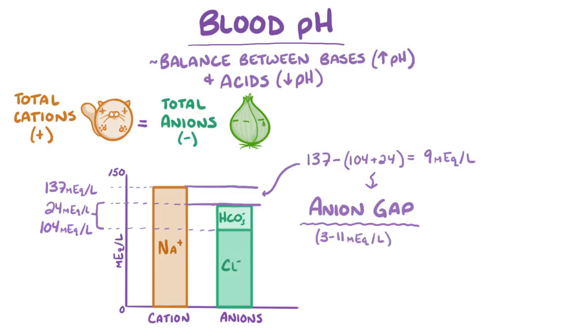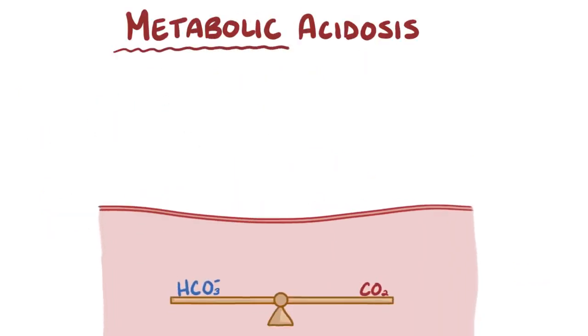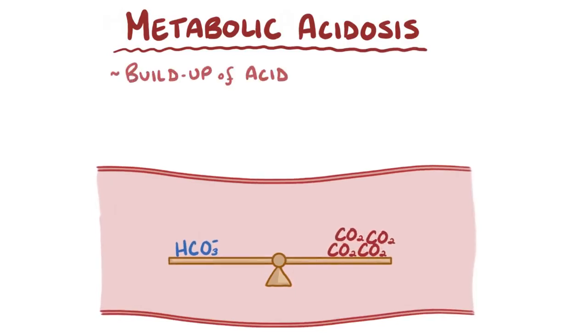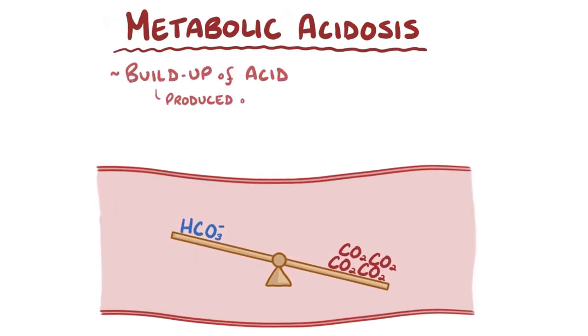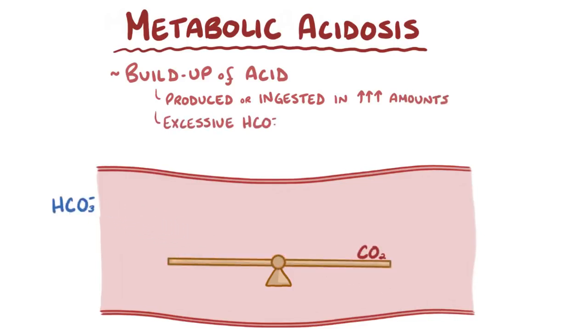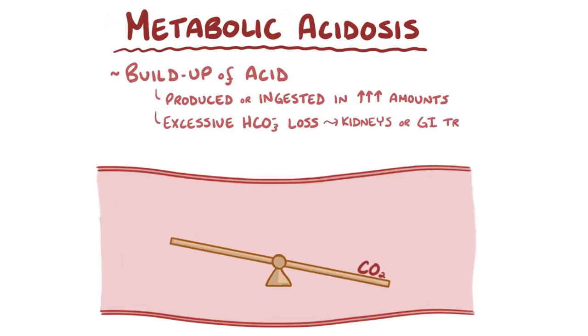The anion gap largely represents unmeasured anions, like organic acids and negatively charged plasma proteins, like albumin. Metabolic acidosis arises either from a buildup of acid in our blood, which could be because it's produced or ingested in increased amounts, or because the body can't get rid of it, or from excessive bicarbonate loss from the kidneys or gastrointestinal tract. The main problem is that they lead to a primary decrease in the concentration of bicarbonate in the blood.